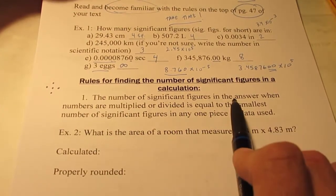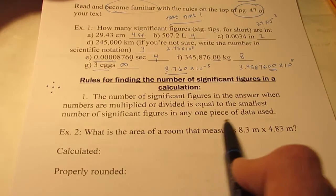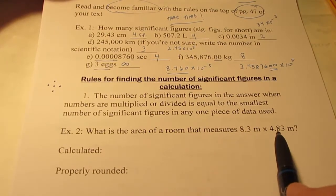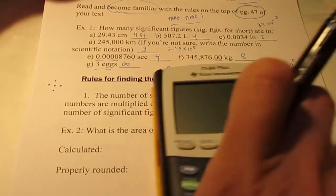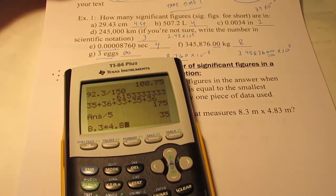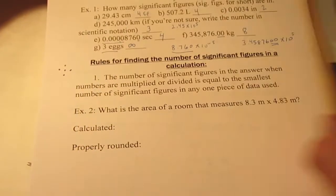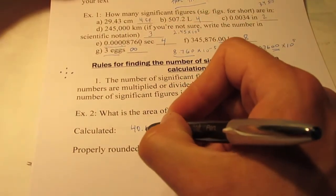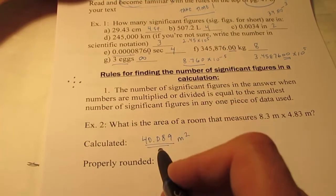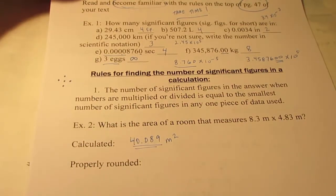So rule number one: the number of sig figs in an answer when numbers are multiplied or divided is equal to the smallest number of sig figs in any one piece of data used. So if I wanted to find the area of a room that was 8.3 meters by 4.83 meters, I would multiply those two numbers together because area is length times width. And my calculator would say 40.089. So my calculated answer is 40.089 square meters. Now, I claim that that measurement is more accurate than my data provides for. I have to round this to the proper number of significant figures.